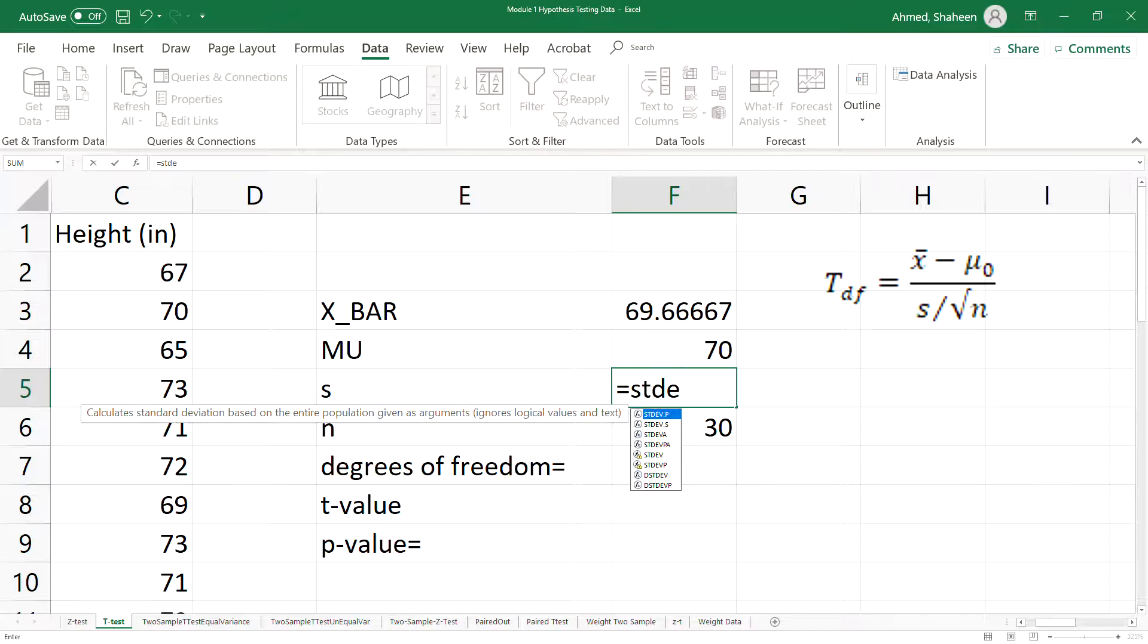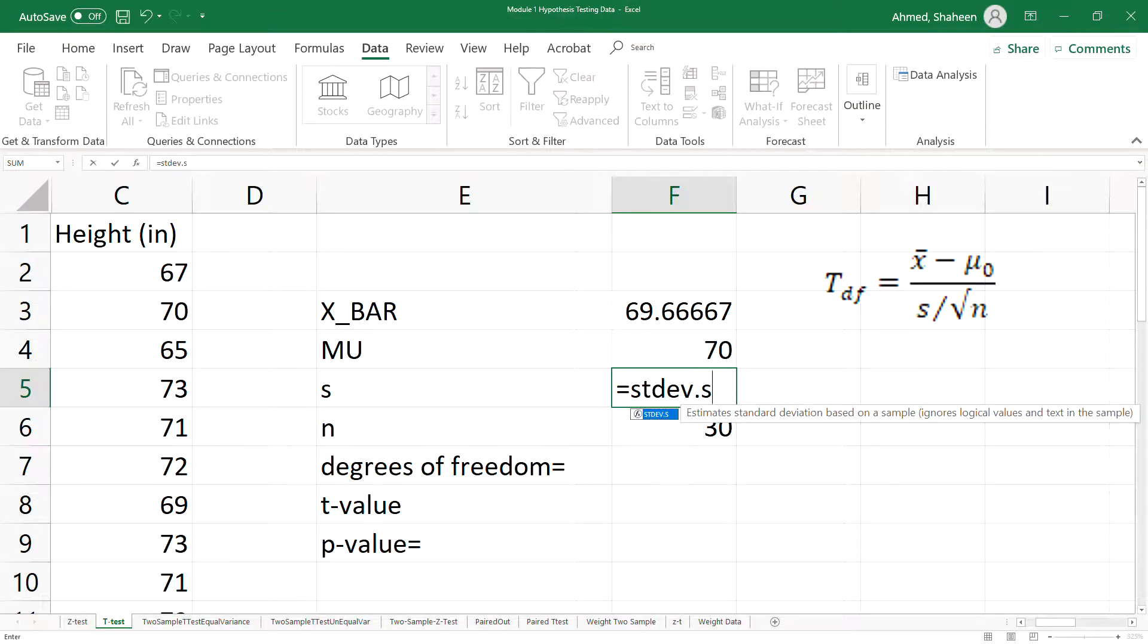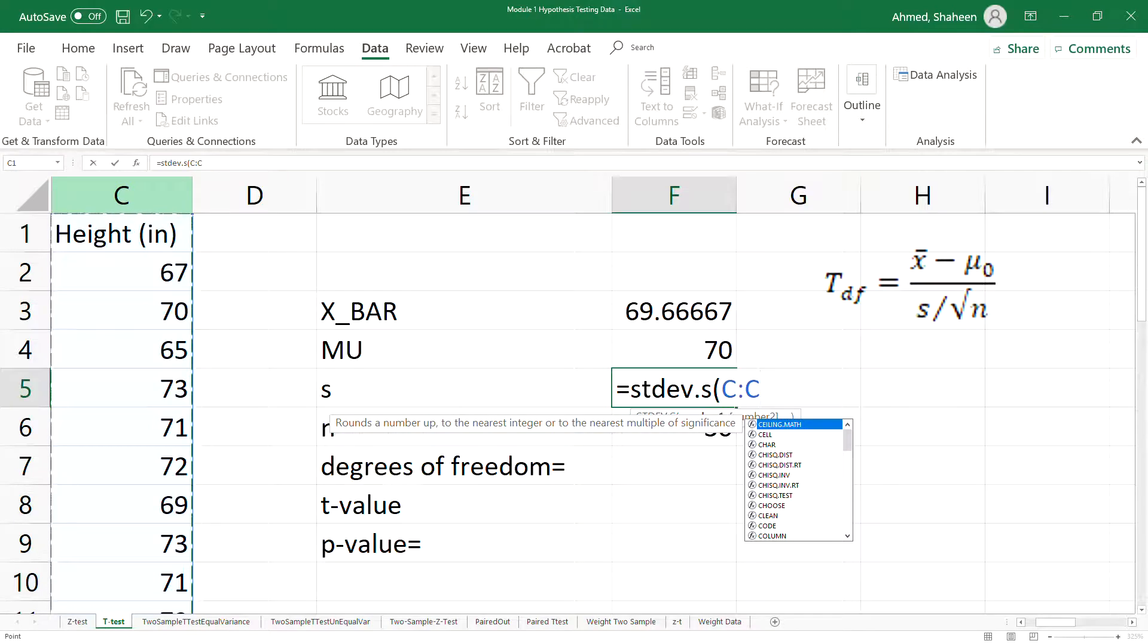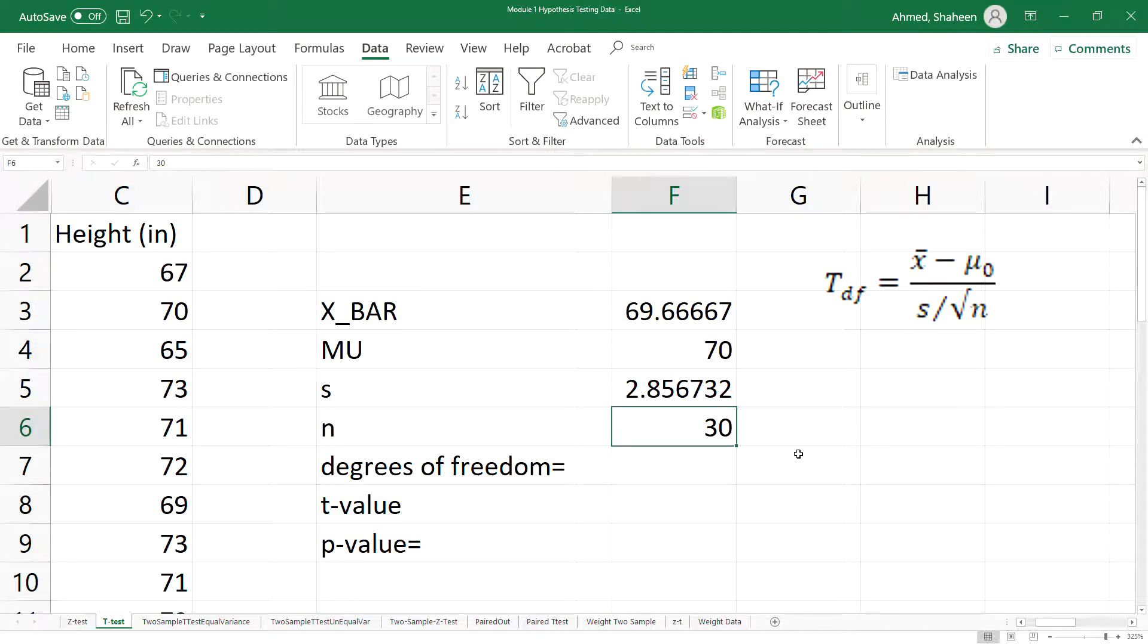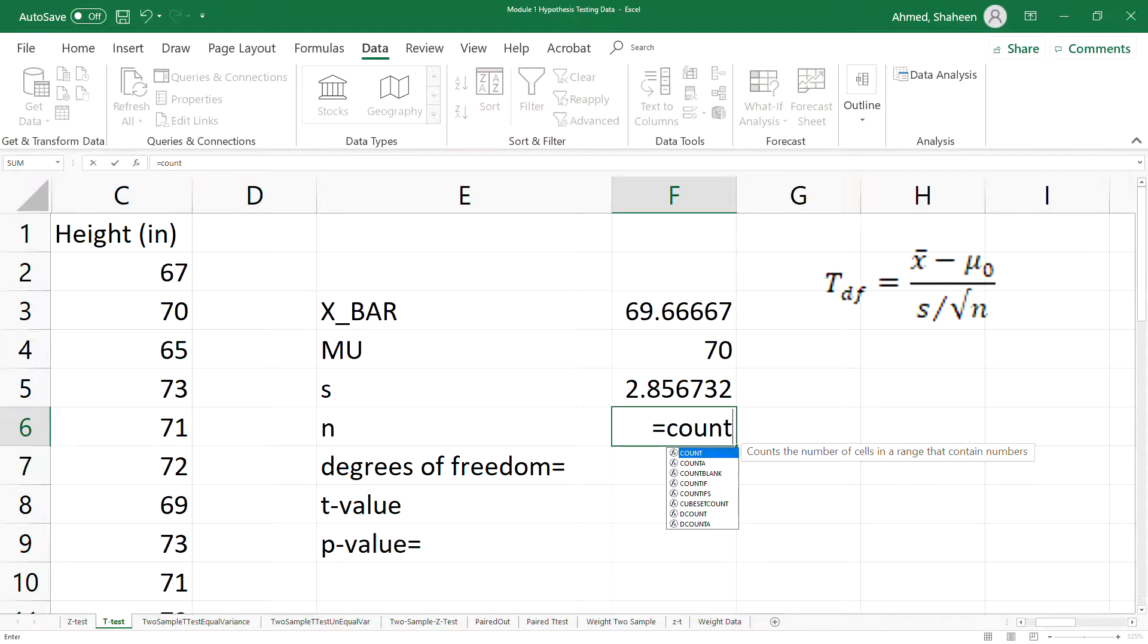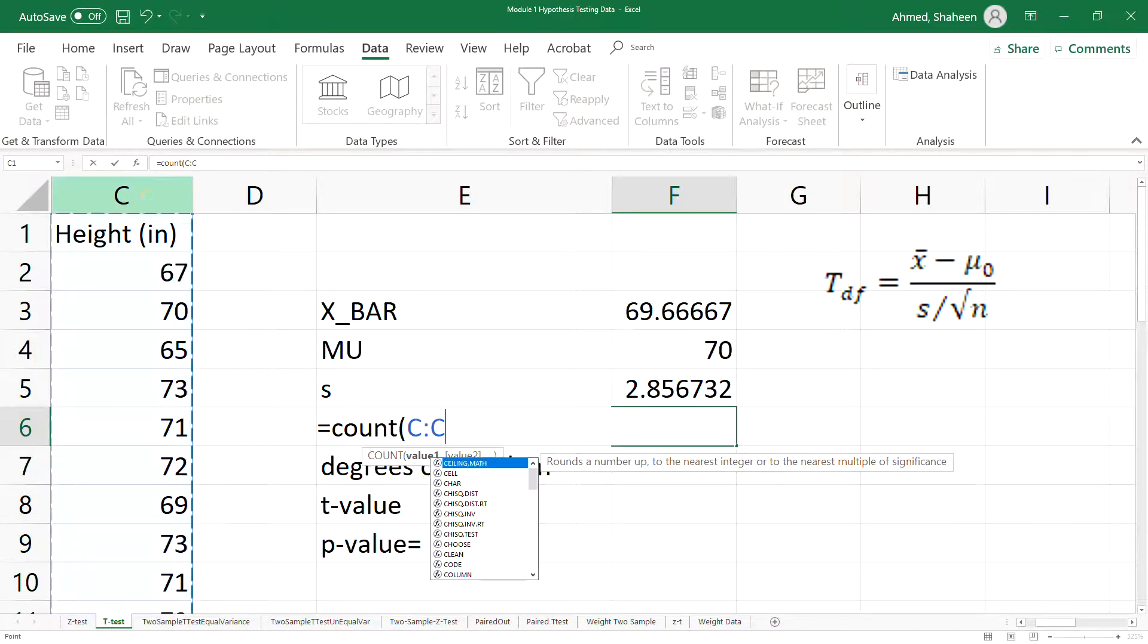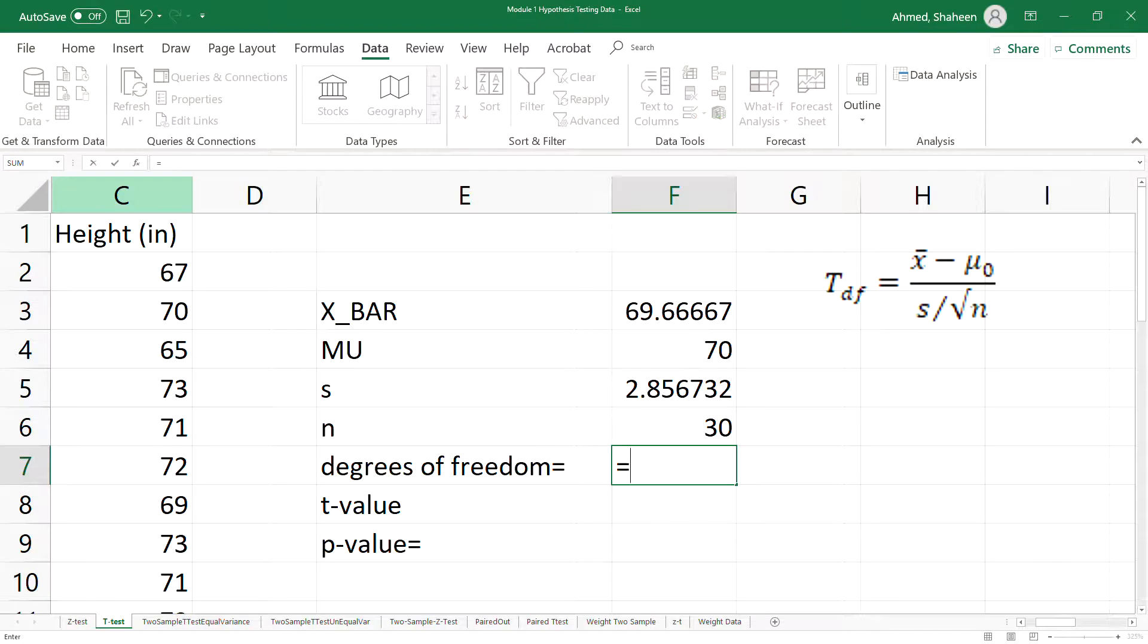STDEV.sample, select that column, and it will produce the sample's standard deviation. Degrees of freedom is simply n minus 1. To calculate n, you can say 'I collected 30, I know,' but for a big dataset you can use the COUNT function to count the numbers. That's 30; degrees of freedom is n minus 1.